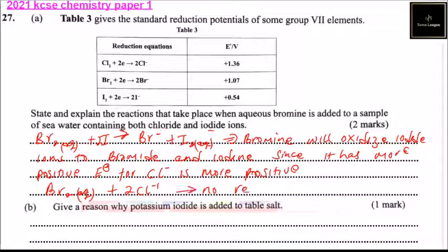So part B, give reason why potassium iodide is added to table salt. So the reason is potassium iodide is a source of iodine.